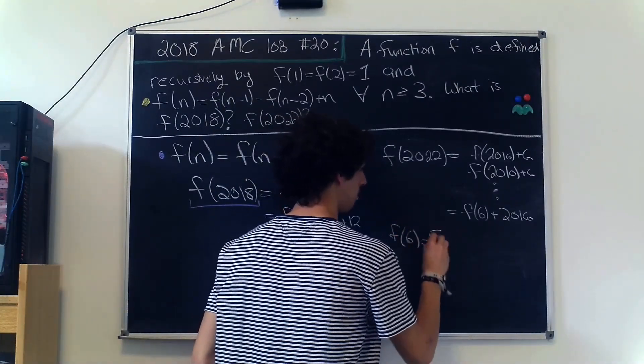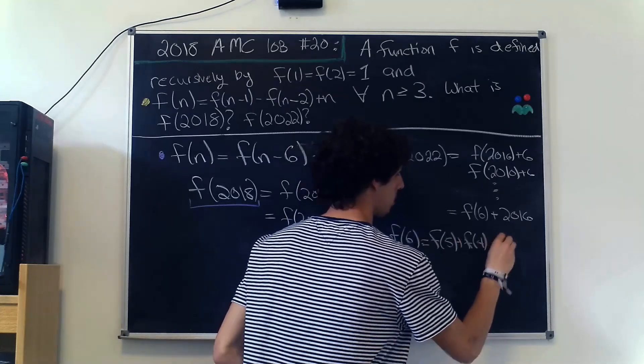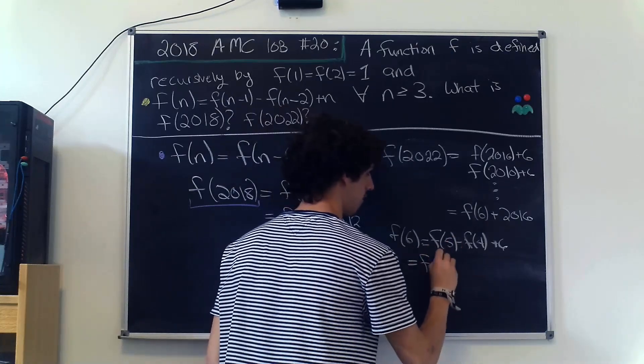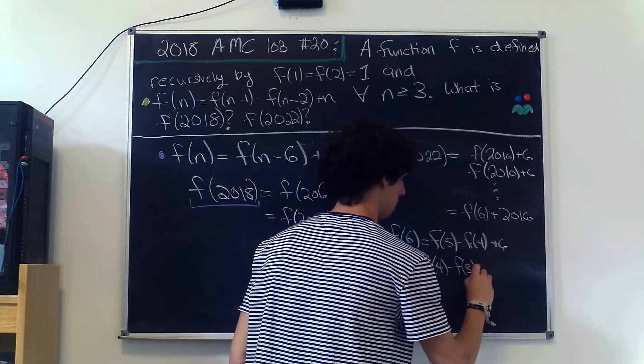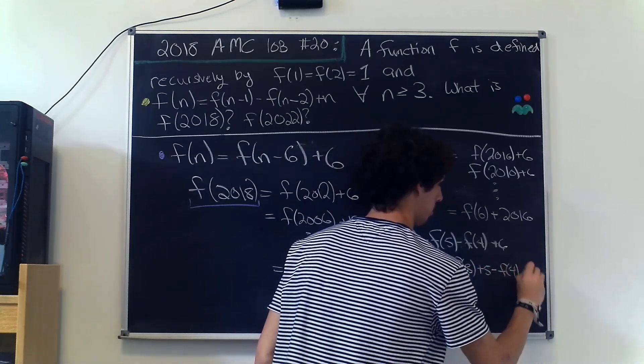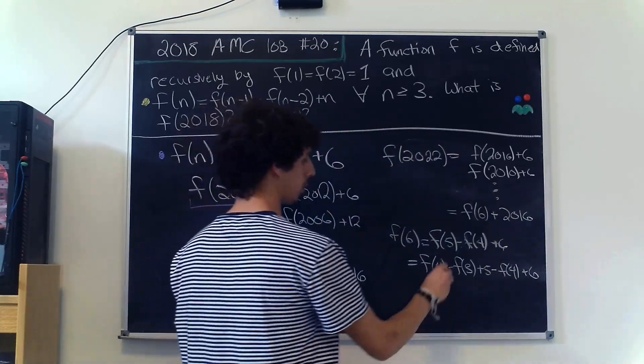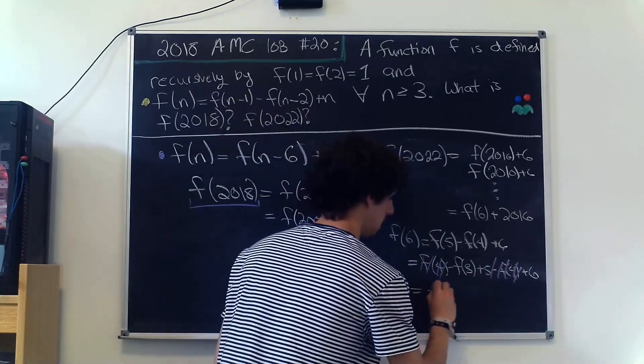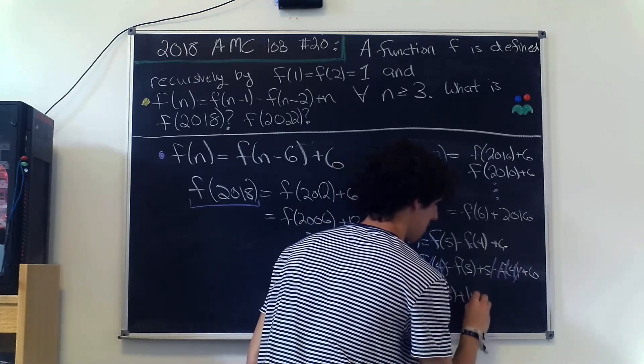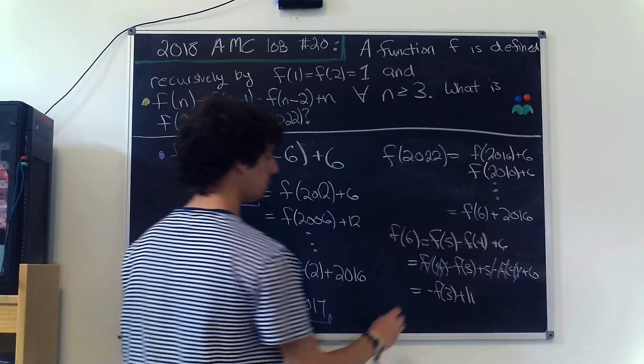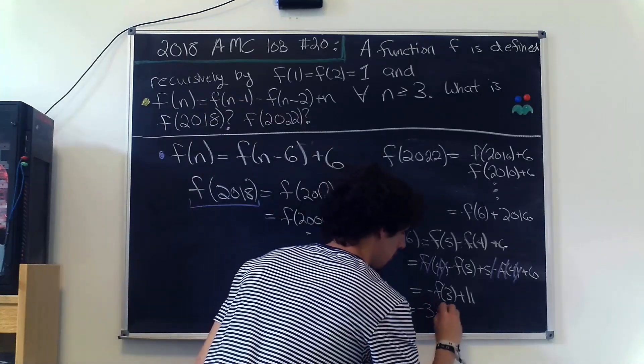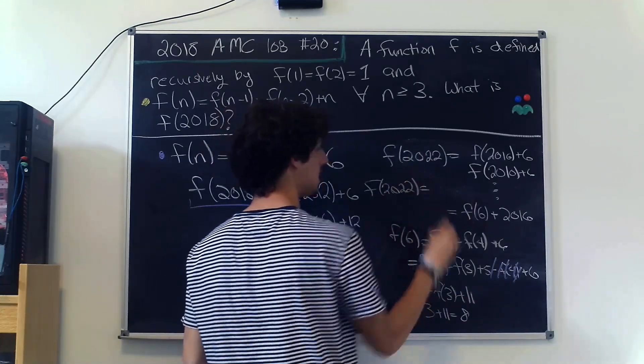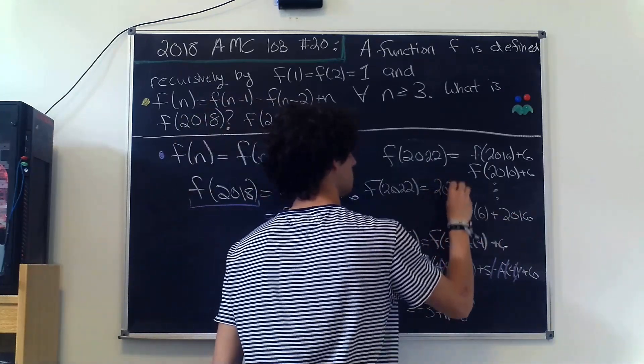So that's going to be f(5) plus f(4) plus 6. So we'll have f(5) minus f(4) plus 6, but then we want to expand out this f(5), so we'll have f(4) minus f(3) plus 5 minus f(4) plus 6. So here we'll cancel this f(4) and this f(4) here because it's negative, and we'll have negative f(3) plus 11. But we know that f(3) is equal to 3, and so we'll have negative 3 plus 11, and this is going to be 8, which means that f(2022) is going to be equal to 2016 plus 8, which is 2024.